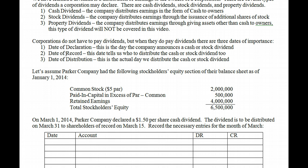The date of record does not actually impact our financial position. Once you've declared it, you have the debt. The date of record just tells us who the debt is being paid to — as of that day, if you own the stock, you get the dividend. The date of distribution impacts our financial position because it removes the debt component and replaces it with the actual asset or shares of stock. So the two dates we have to worry about in accounting are declaration and distribution. Date of record doesn't create a journalable event.